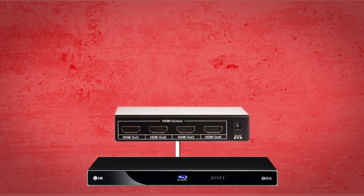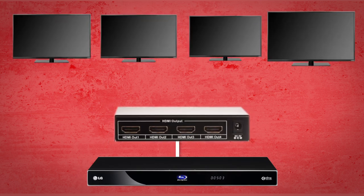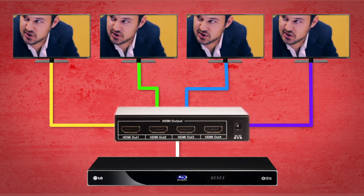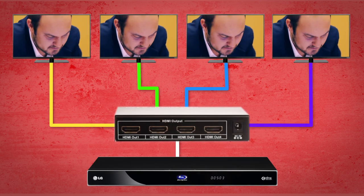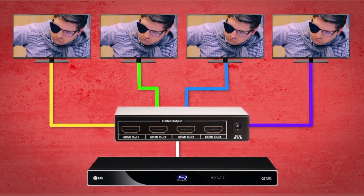Now let's look at the splitter. A splitter is used when you have one source device that you want to share with multiple displays. So you would take a single cable from your source into the splitter, then you can run multiple cables to all of your different displays.